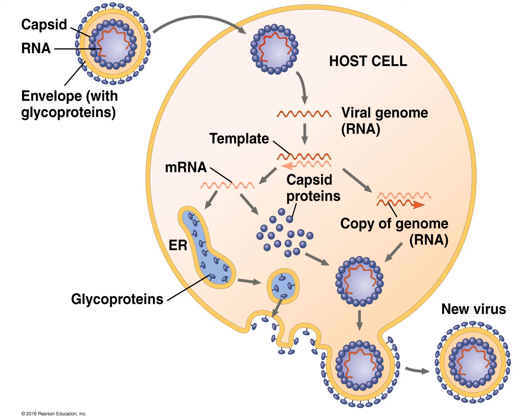Once inside, the capsid — a layer of protein — is shed, and the virus's genetic material (in this case RNA) is exposed to the cell. The cell is then genetically hijacked by that viral genetic material. The host cell uses its own resources, energy, and machinery to copy the virus's genetic material and produce viral proteins, which assemble spontaneously into new viruses that bud off to infect other cells.